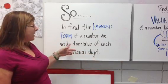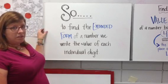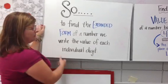So to find the expanded form of a number, we simply write the value of each individual digit. This can get a little long if you have big numbers.